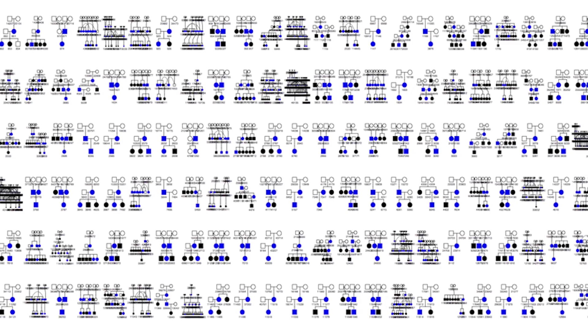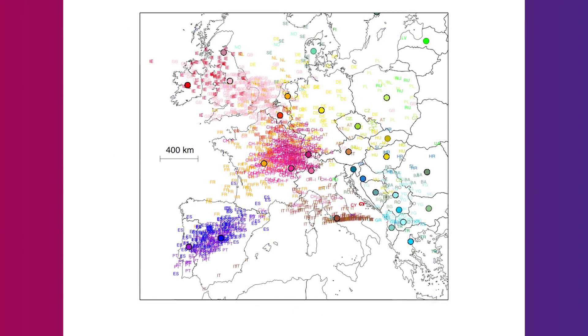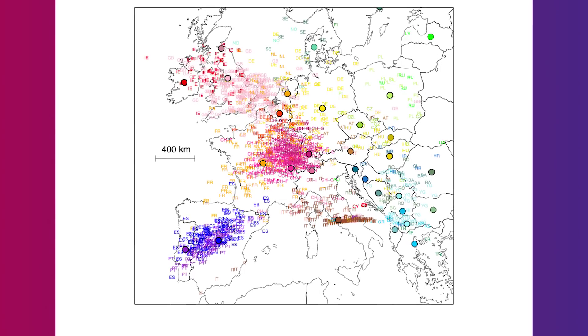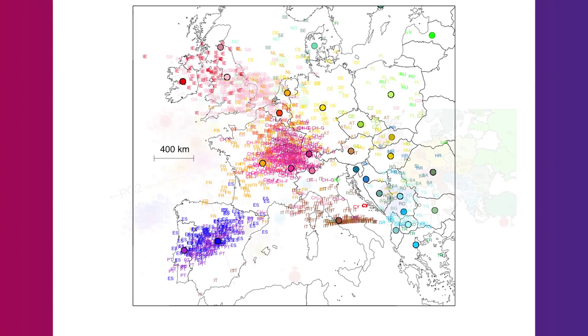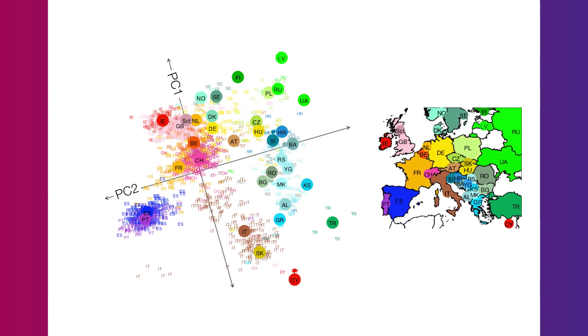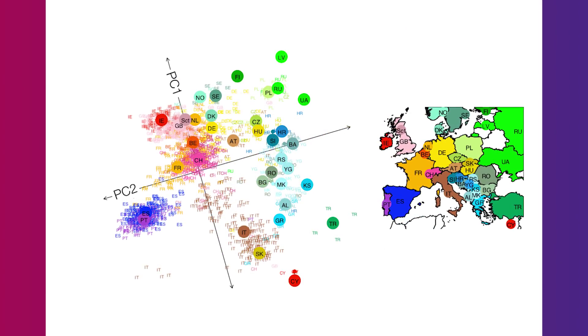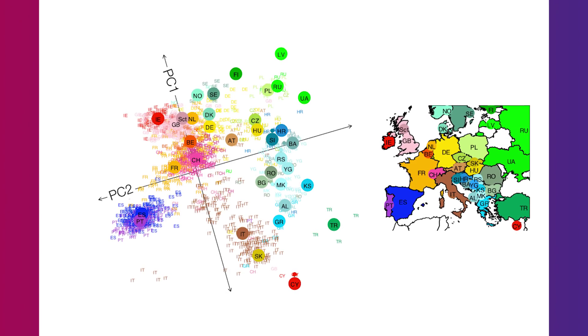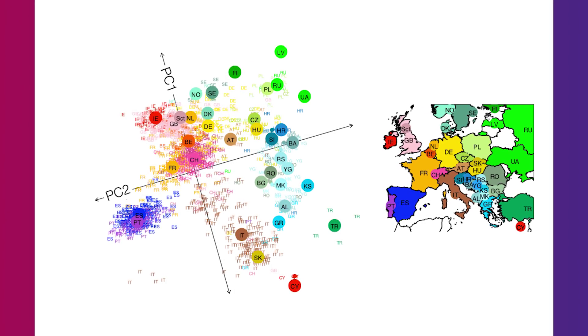Humans across the globe are so similar to one another genetically that we thought that if we looked just within one region of the globe, we would not be able to tease apart the genetic similarities and differences that are there. And in fact, we could with remarkable accuracy. The level of resolution that we can do it with was a real surprise when we first started.